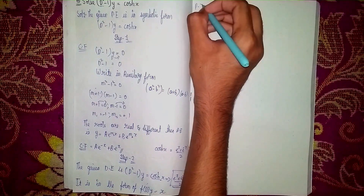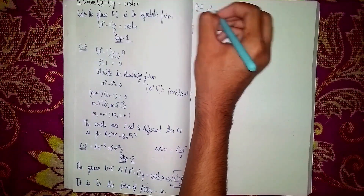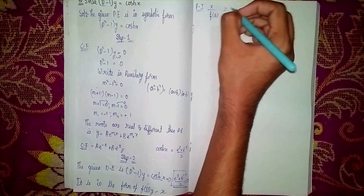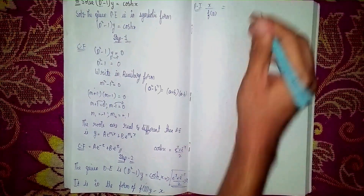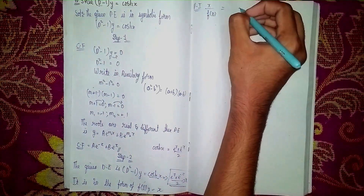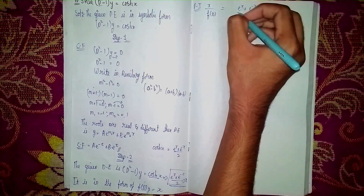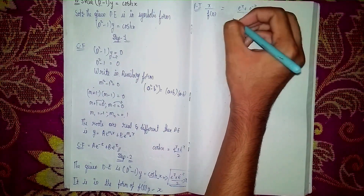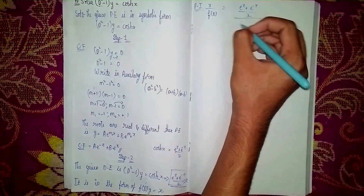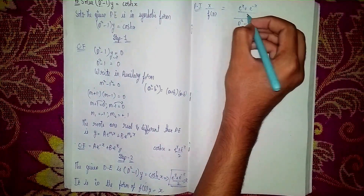The particular integral PI equals X divided by f(D), where X is the right-hand side. So PI equals (e^x + e^(-x)) / 2, divided by f(D) which is D² minus 1. Taking 1/2 outside, we get (1/2) times (e^x + e^(-x)) divided by (D² - 1).